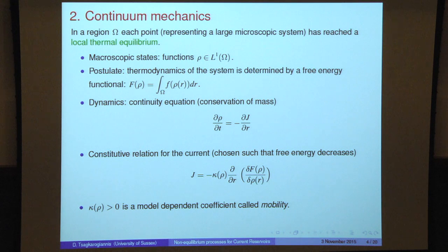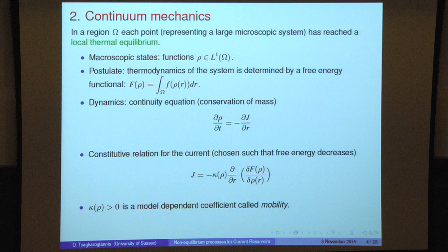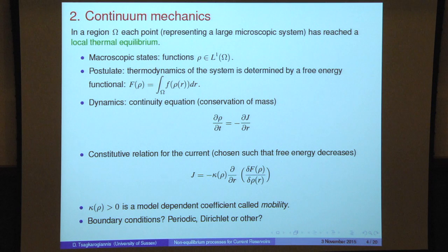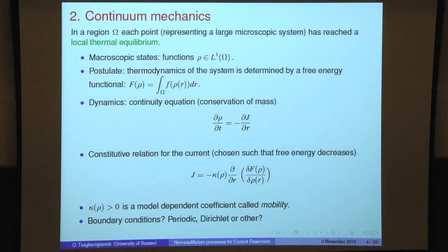I have to couple this description with boundary conditions — and the boundary conditions are what the reservoirs do for my medium. What kind of boundary conditions shall I put? If I were in an equilibrium situation, maybe I would put periodic boundary conditions. But if I want to model these two reservoirs that fix the densities, I should think of Dirichlet or maybe some others. The purpose of this talk is to motivate some others rather than the Dirichlet boundary conditions.